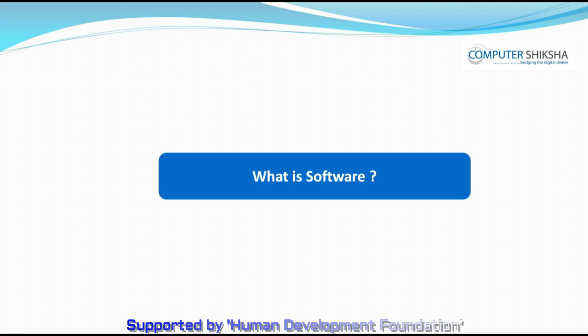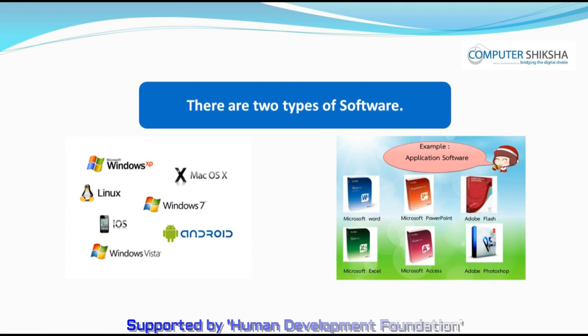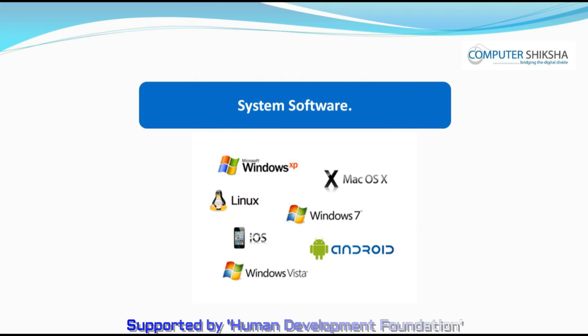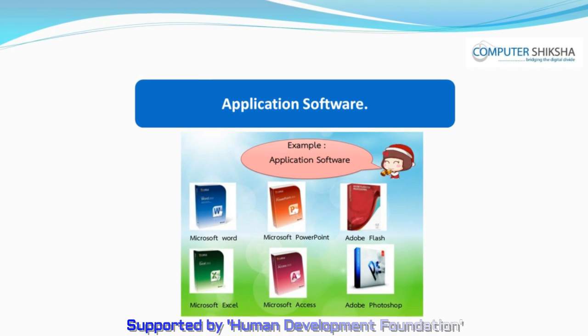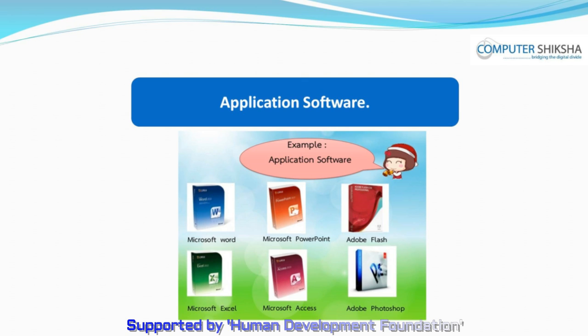Do you know what is software? Software is a program through which you are able to work on the computer. We can divide all available software into two parts: system software, which makes a computer user or programmer work when he is working on Windows on the computer, and application software — those softwares which a user installs on his computer to use as per their daily needs.